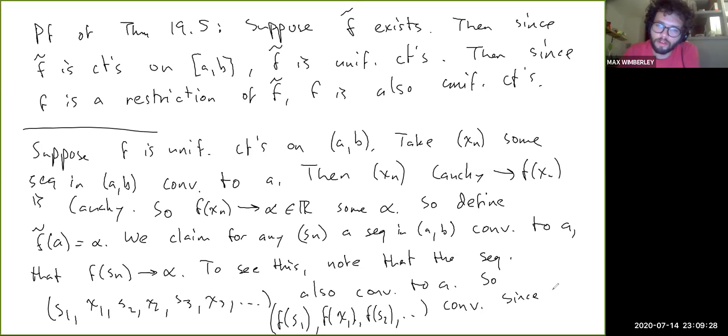So then that means that this sequence is Cauchy which means it converges to some number. Since f(xn) is a subsequence, then the limit is alpha. The limit of this interwoven f(s1), f(x1), f(s2), f(x2) so on, the limit of that has to be alpha because it converges. We know it converges and one of its subsequences converges to alpha, but then because f(s1), f(s2) so on is another subsequence, the limit of that is also alpha. So since f(sn) is also a subsequence, then f(sn) goes to alpha too.